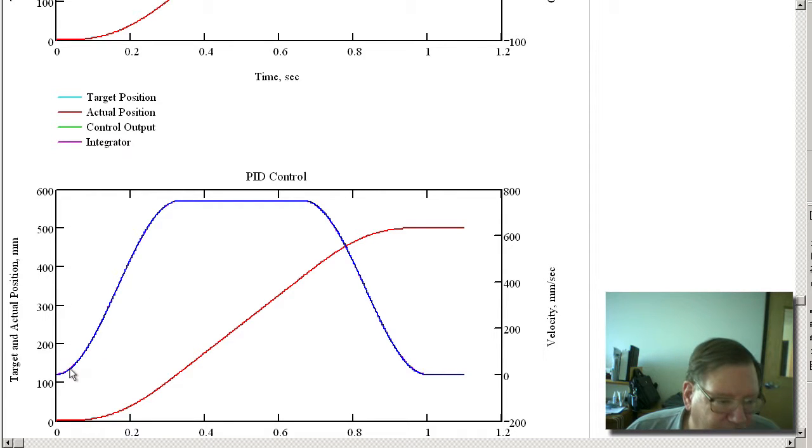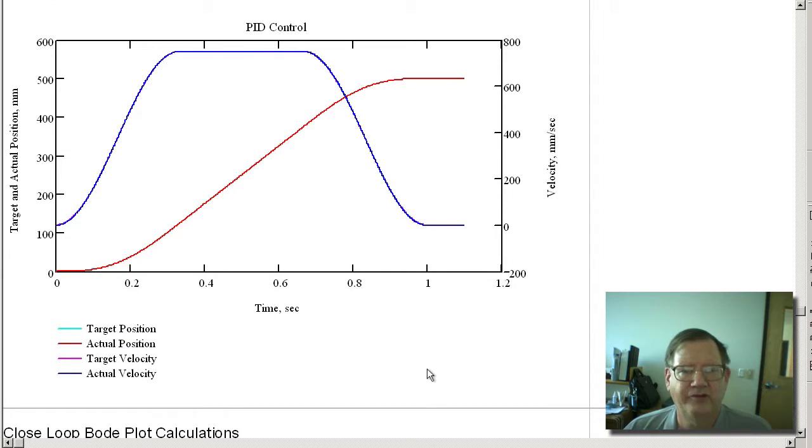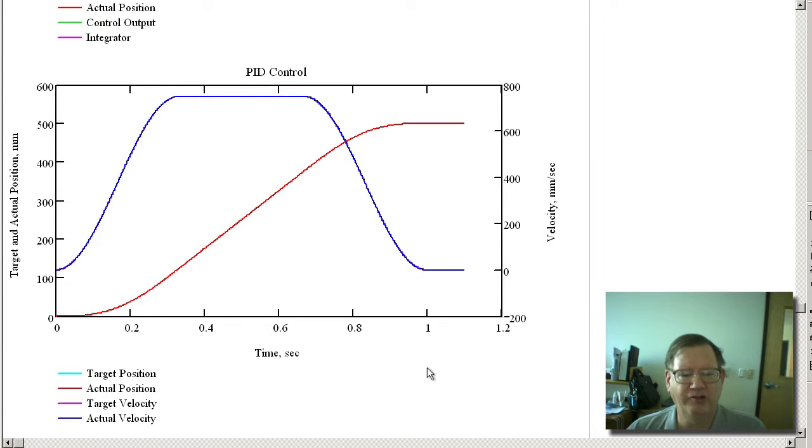And then we can see the velocity. And you can see that there's just a little bit of difference between the target and actual velocity. But for the most part, it is tracking very, very close. So the symbolic formulas we calculated have done what we expected them to do. And they're working just as predicted.